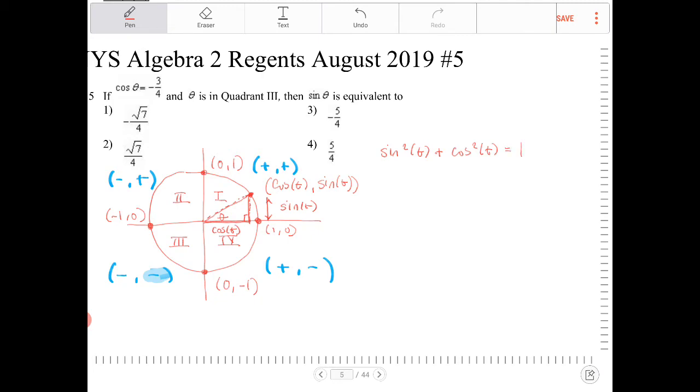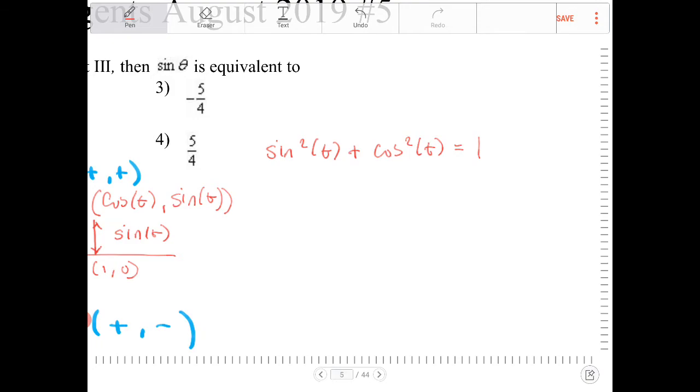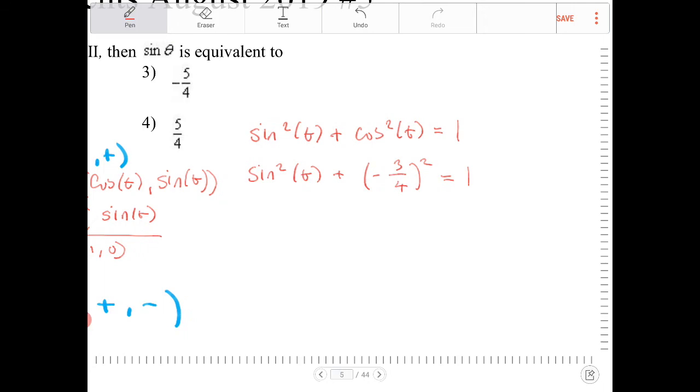I know what cosine theta is—it's negative three-fourths. So I can say sine squared theta plus negative three-fourths squared equals 1. I can now solve for sine squared theta. Sine squared theta plus nine-sixteenths equals 1.